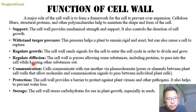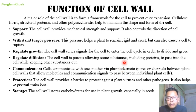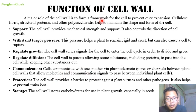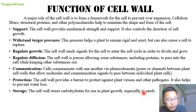The cell wall regulates diffusion — it is porous, allowing some substances including proteins to pass into the cell while keeping other substances out, controlling the flow of substances from higher to lower concentration. It regulates communication — cells communicate with one another via plasmodesmata, which transport proteins, mRNA, and siRNA. The cell wall also provides protection against plant viruses and pathogens, helps prevent water loss, and lastly provides storage — storing carbohydrates such as glucose and sugar for use in plant growth, especially in seeds.